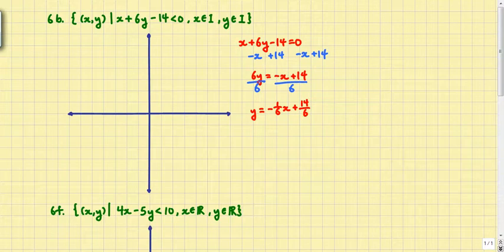The problem is that 14 over 6 is not a very good y intercept for us to graph. We want to be more precise. Therefore, we're going to find an x value such that when we substitute it into the equation, it would be divisible by 6 and then our y coordinate will also be a whole number. So we're going to let x equals 2.